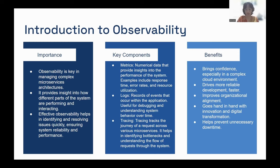There are three different components for observability. The first one is metrics — numerical data that provides insights into performance of the system, such as response time, error rates, and resource utilization. The second is logs — records of events that occur within applications, useful when trying to debug and understand system behavior over time. The third is tracing, which tracks the journey of a request across various microservices and helps identify bottlenecks and understand the flow of requests through the system.